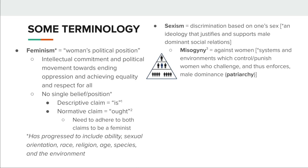Sexism has traditionally been understood as discrimination based on one's biological sex. Historically, people in Eurocentric Western traditions have ascribed to what we call a sex binary, believing there are only two biological sexes — male or female. But as you'll learn, there are not only two biological sexes that occur in nature. We have historically termed intersex individuals, referring to what we might call a third sex, of which there is still a great variety of combinations.